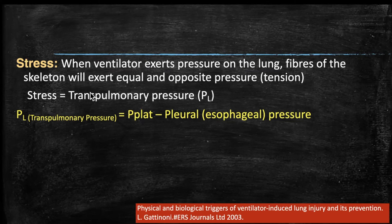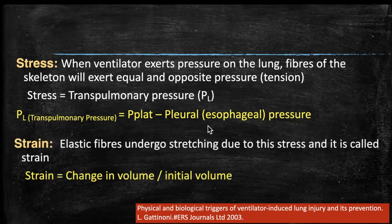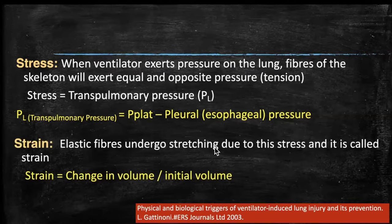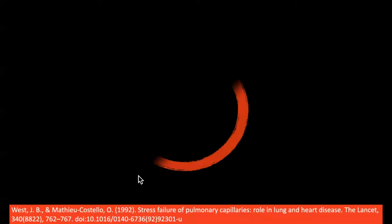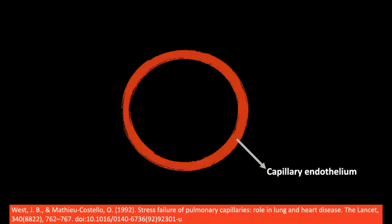The actual pressure applied over the alveoli to distend the lungs is stress or trans-pulmonary pressure — measured as the difference between airway pressure and pleural pressure via esophageal monitoring. Strain is the elastic fibers undergoing stretching due to the application of stress — basically a change in volume compared to the initial volume (FRC). Since the change in volume above FRC is normally tidal volume, strain = VT / FRC.